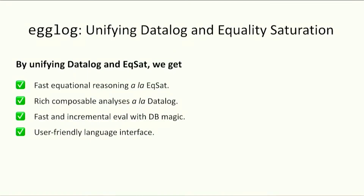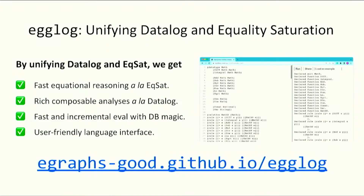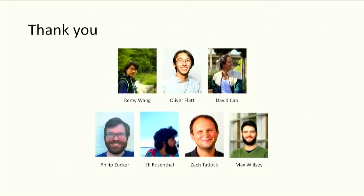To summarize, egglog unifies datalog and equality saturation and goes beyond. By unifying them, we get fast equational reasoning à la EQSat, rich composable analysis à la datalog, and fast incremental evaluation with techniques from the database community. Additionally, egglog is a standalone user-friendly language with a web demo where you can write your own egglog programs — no need to write EQSat applications in an external language like Rust. This is all because of our language-based design. Thank you, and thanks to my collaborators.